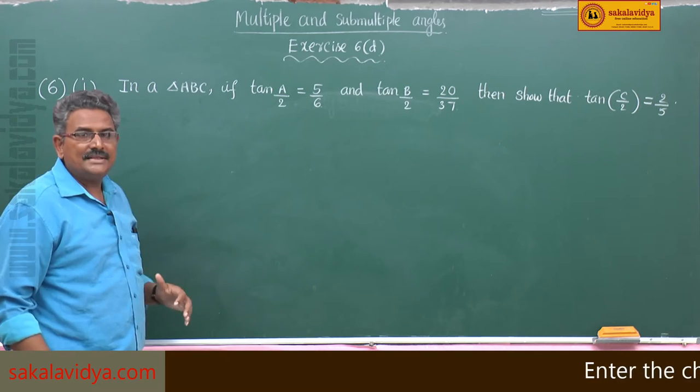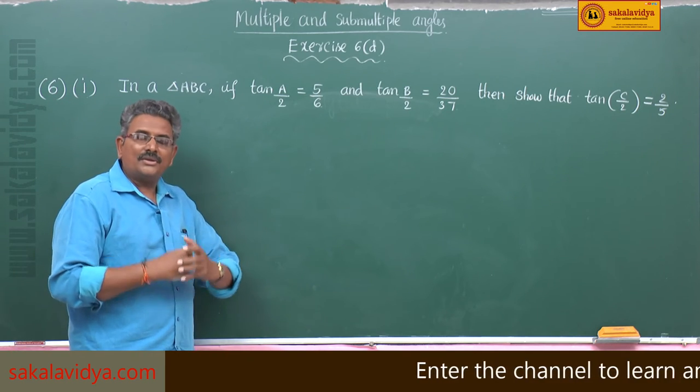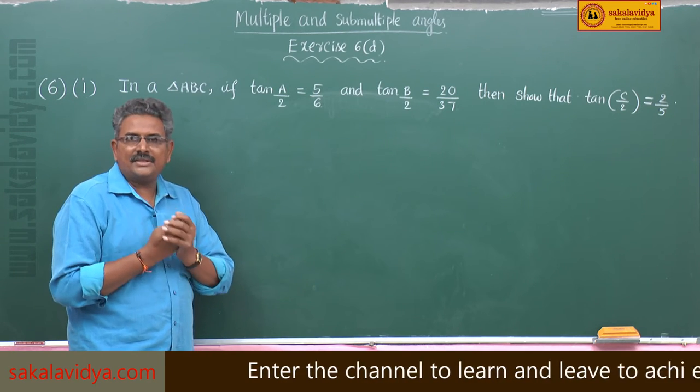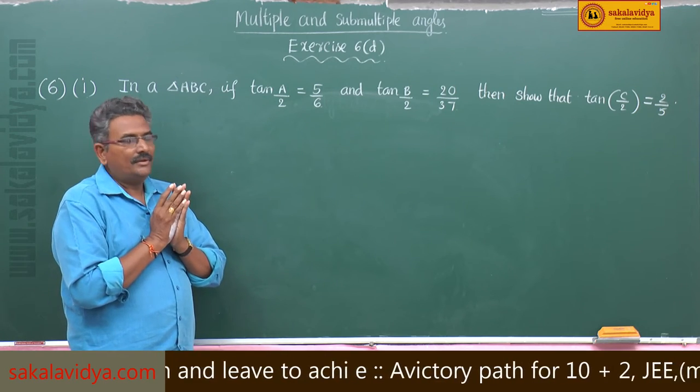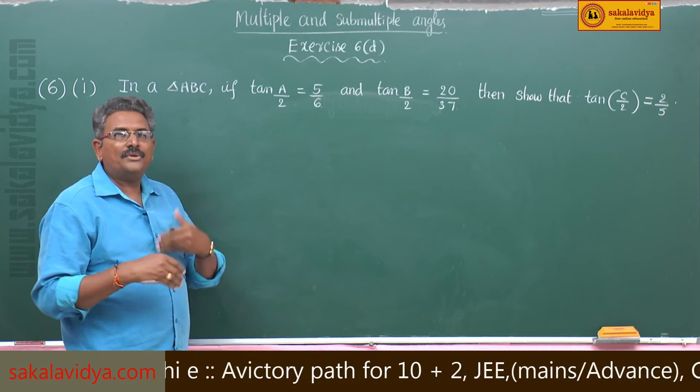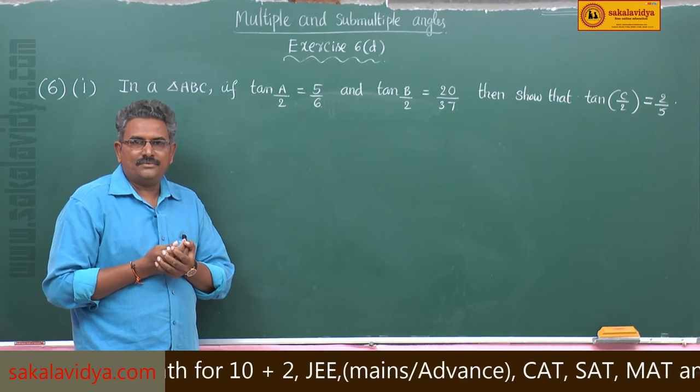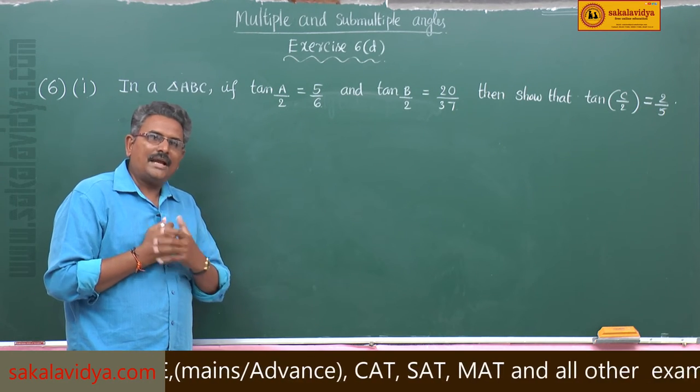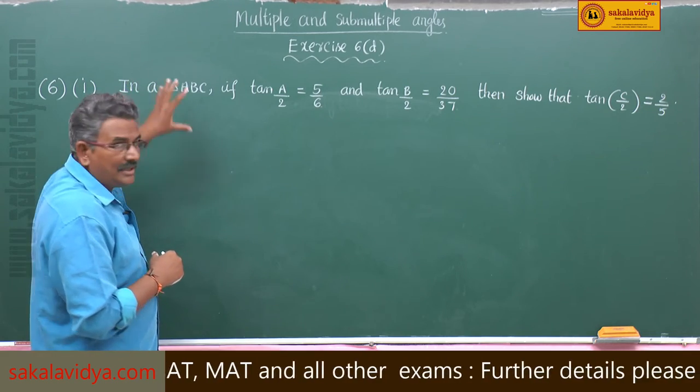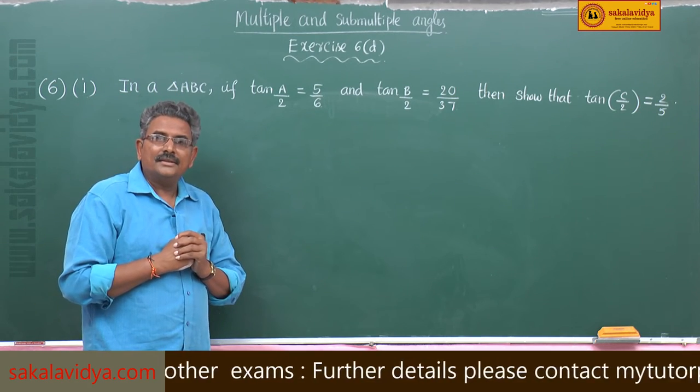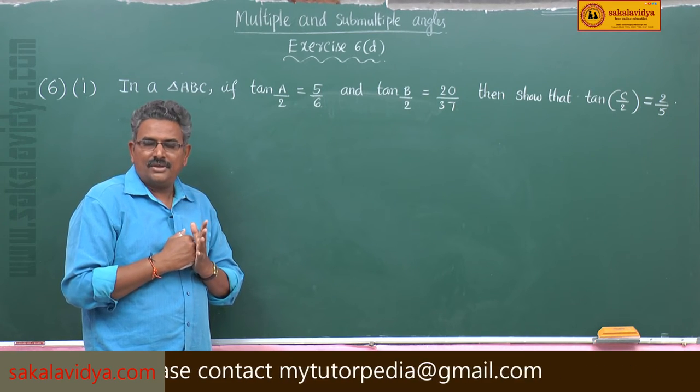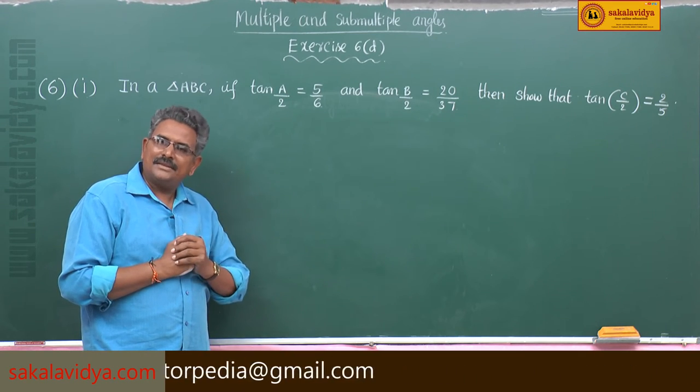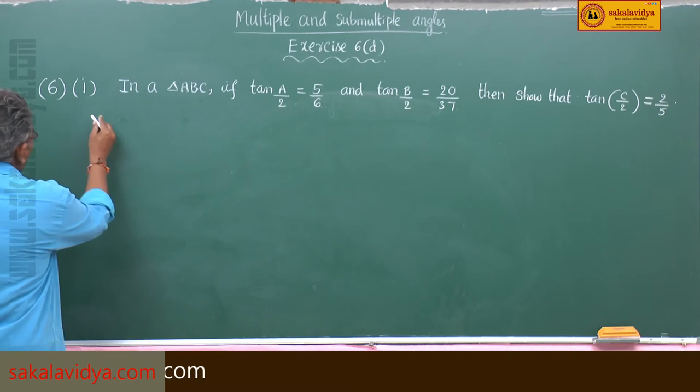As the triangle ABC is given, let us have a discussion here. Can we have any relation in terms of tan A by 2, tan B by 2, tan C by 2? Yes, we have the relation as the triangle ABC is given, the sum of the interior angles of a triangle is 180 degrees. So let us proceed in that manner.